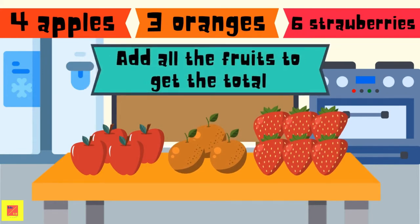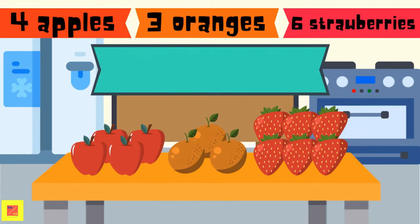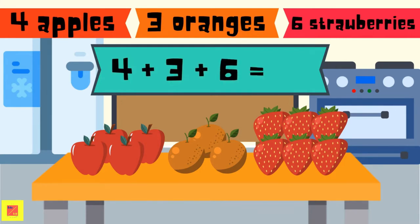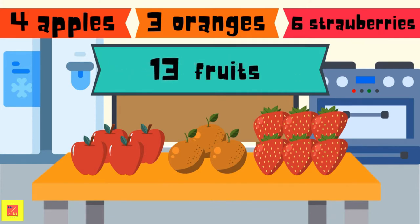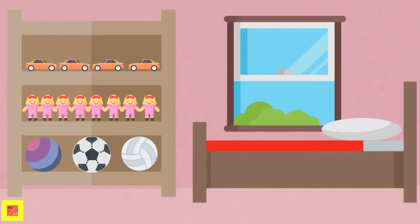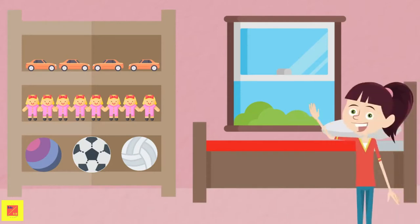To know how many fruits there are in total — 4 apples plus 3 oranges plus 6 strawberries is equal to 13 fruits in total. Easy peasy! Let's head to Irene's room to see what else she needs help with.